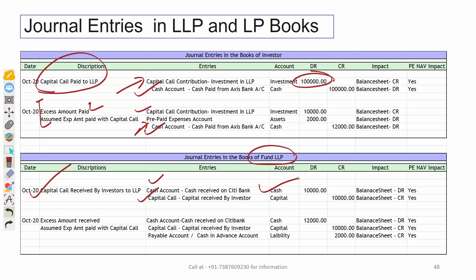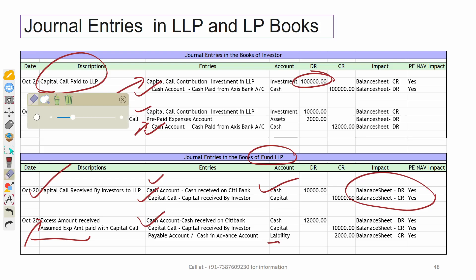This affects your cash and capital, and will also impact your NAV. For the scenario where excess capital is received by the fund, the fund records: debit Cash account, credit Capital Call account, and credit the Payable or Cash-in-Advance account. This is how funds record accounting entries in the books of the fund.